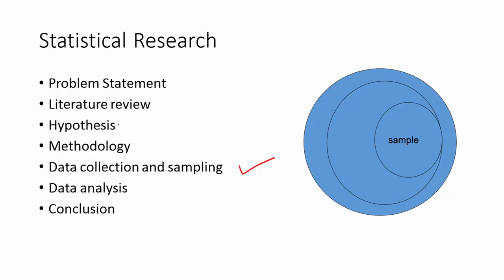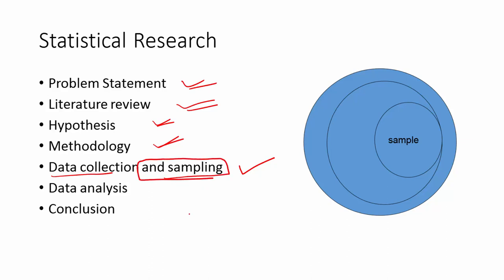In statistical research there are various steps involved: you start with a problem statement, then you do a literature review, then you come up with a hypothesis and decide on your methodology. You collect data through experimentations or surveys, and you also do sampling — which is what we are going to cover in this lecture. Then you analyze data and make conclusions.